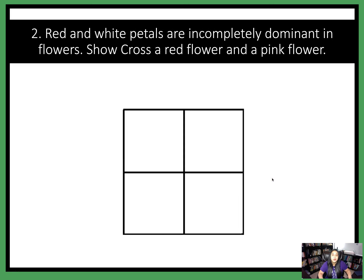Here's number two. We're sticking to the same situation where red and white are incompletely dominant. Now we are crossing a red flower and a pink flower. Go ahead and set up your problem, solve the square and see what you get. If you need to pause the video, go ahead and pause now before you keep watching. If you set up your square, you'll end up with a red flower as one parent and a pink flower as the other, and when you cross it, you'll end up with two red offspring and two pink offspring.